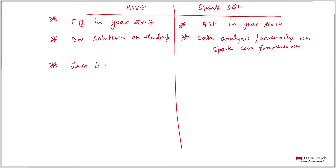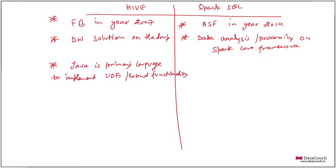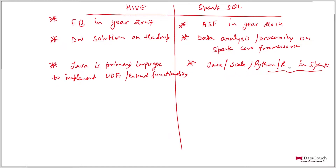For Hive, Java is the primary language, and you can implement UDFs to extend functionality. For Spark SQL, you can use Java, Scala, or Python. There are many options in Spark in general, and apart from SQL, you would primarily prefer Scala and Python, as these two are the most common in Spark SQL these days.